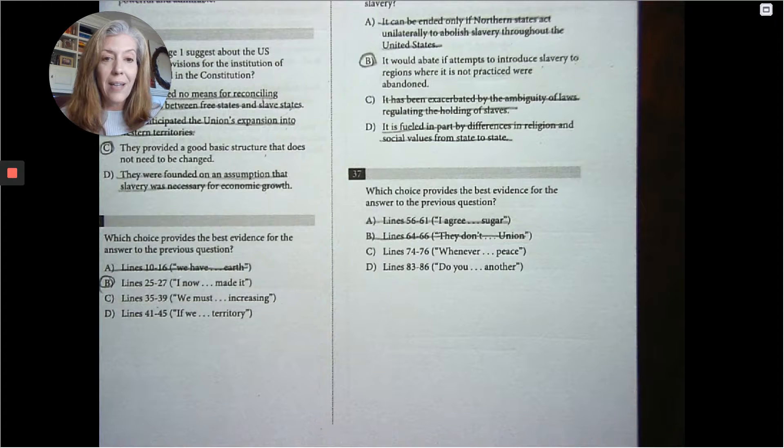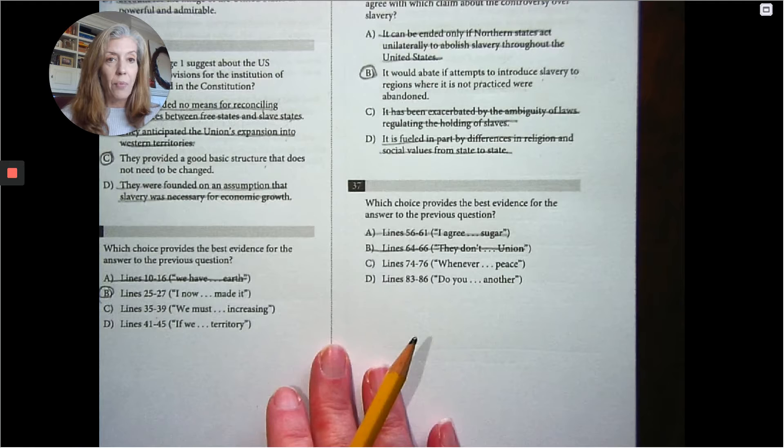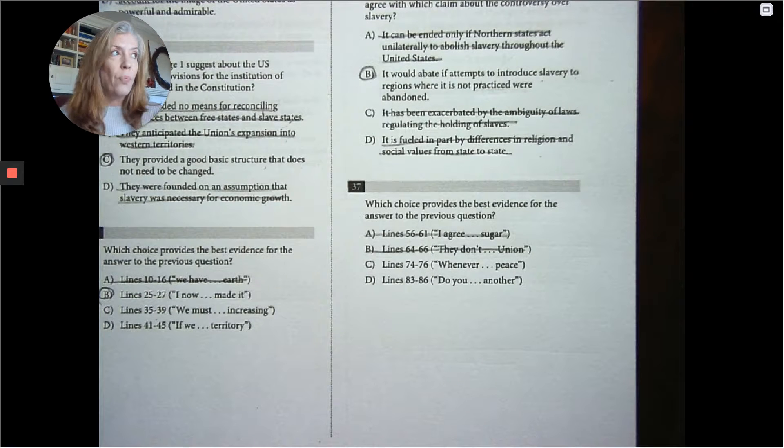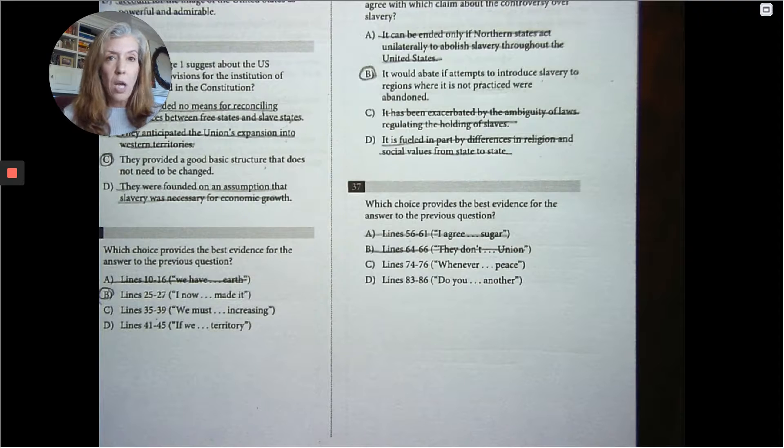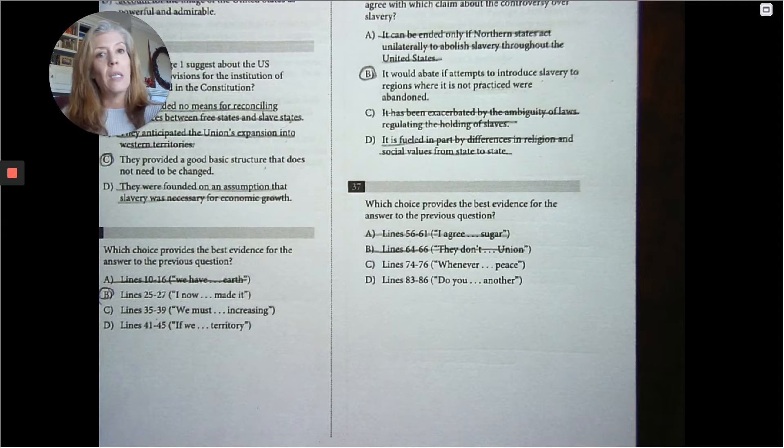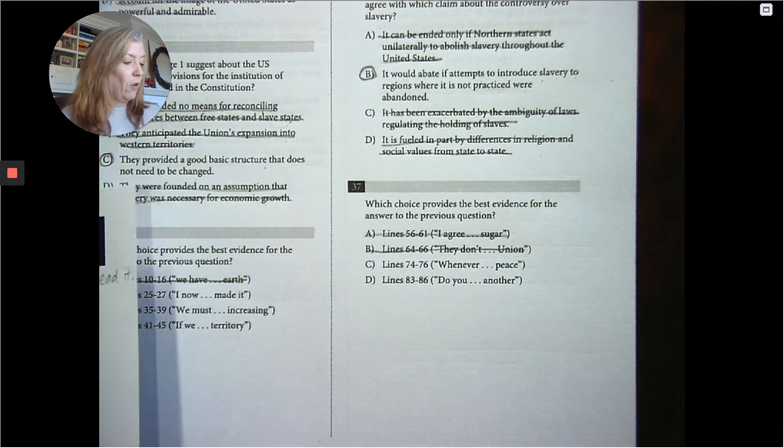So let's start on line 74, starting whenever and ending in peace. Again, we're trying to say don't bring slavery into places that are newly acquired. Don't bring slavery into places that don't already practice this idea or this concept of slavery.